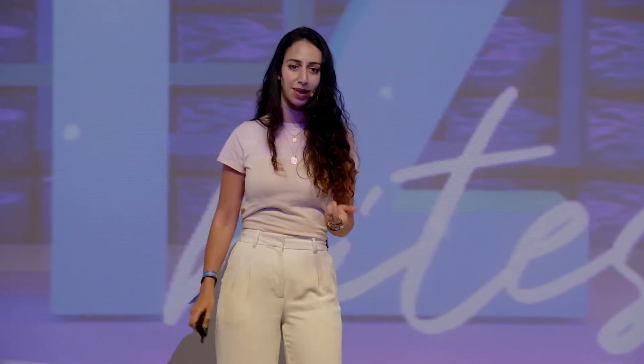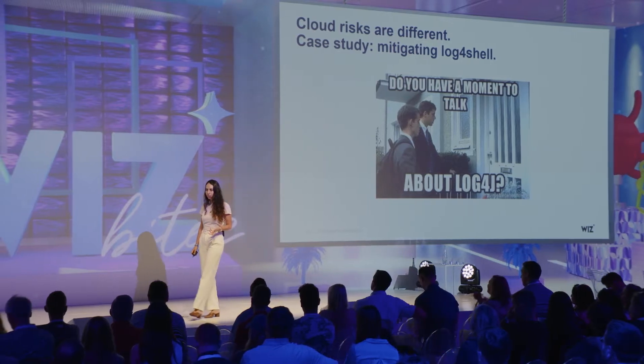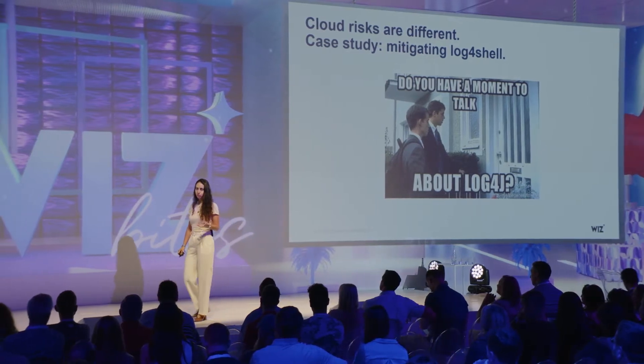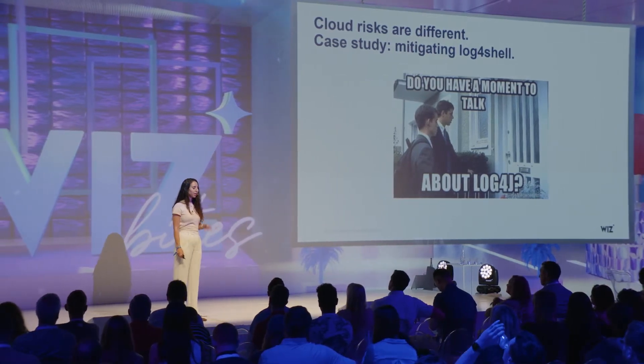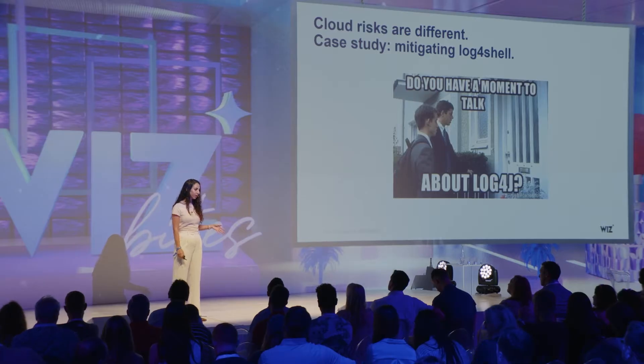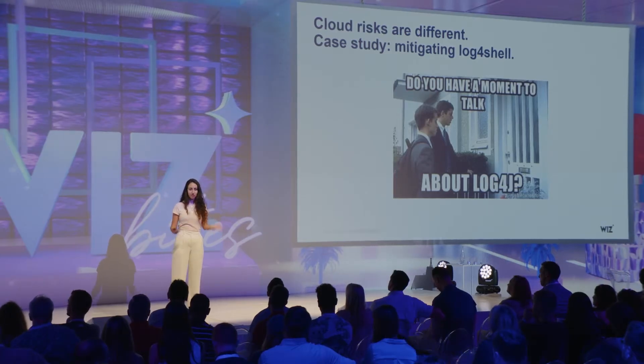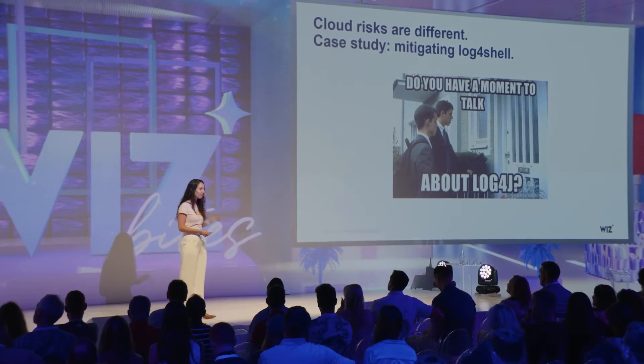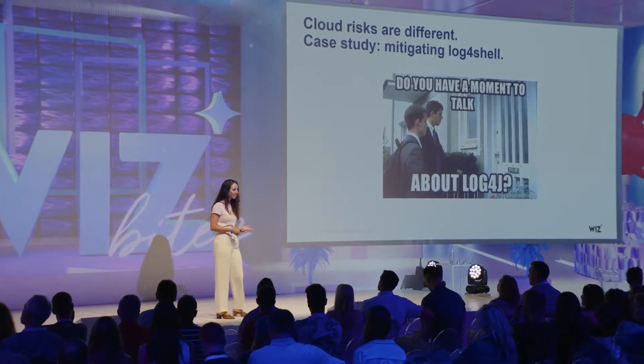The log4shell vulnerability was discovered roughly a week before Christmas in a very popular Java logging library, log4j. It was almost like the perfect storm for organizations, because this vulnerability was easy to exploit. It was in Java, which is obviously super popular, so basically every organization was impacted. And it was easy to exploit, so there was a tight timeline.